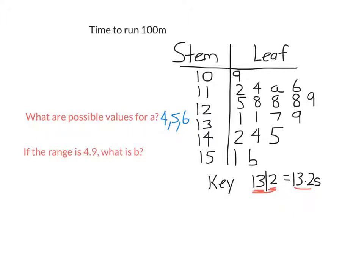Okay, so now we're going to answer this question here. The range is 4.9. What is B? So B is this random score here. We know it's the highest score. It's the longest time to run 100 meters. So the range is 4.9. So let's say that the highest score is x because we don't know what it is exactly.